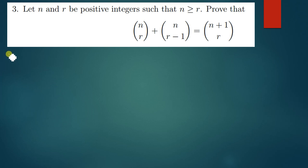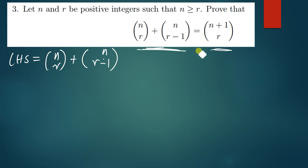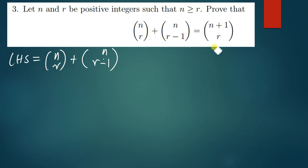So n choose r can also be written using that formula. Let me take the left hand side, which is n choose r plus n choose r minus one. Every time you are proving something equal to another thing, make sure you take the complicated part and simplify it into the simpler version. So we always take the complicated part to simplify it to the simpler one — it's possible to move from there to there but it would take much longer.